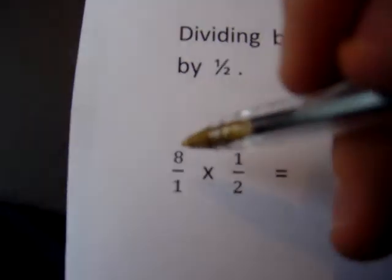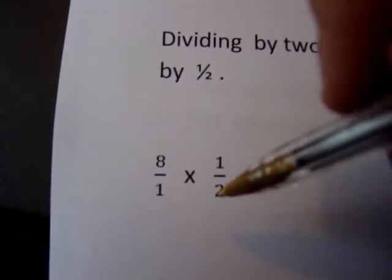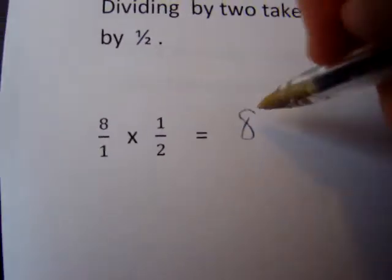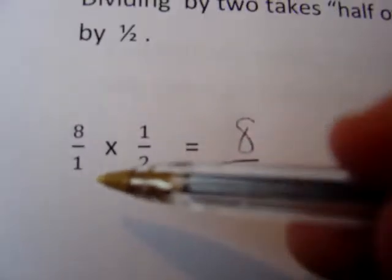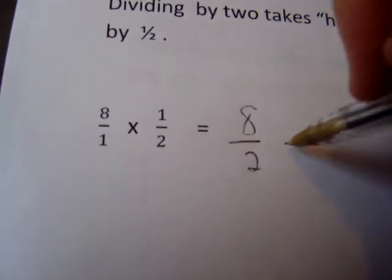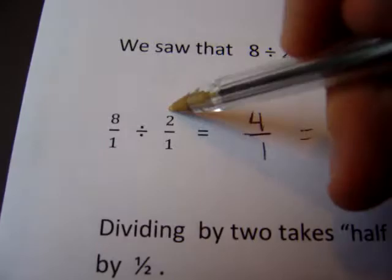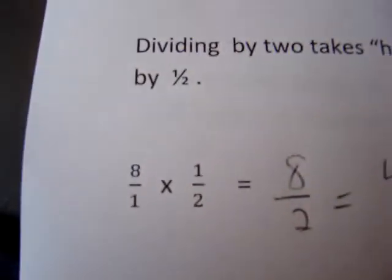Let's check this out: 8 over 1 times 1/2. 8 times 1 is 8, and on the denominator 1 times 2 is 2, and every fraction is division: 8 divided by 2 is 4. Notice above we did 8 divided by 2 is 4.